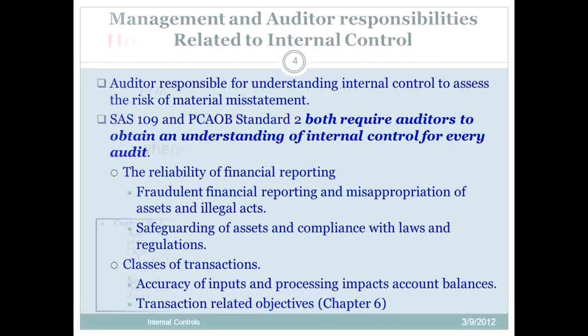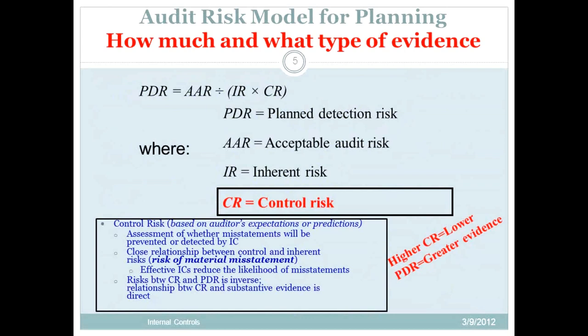Remember the audit risk model: control risk has an inverse relationship to planned detection risk and evidence collection. The higher your control risk, the lower your planned detection risk needs to be, and the more evidence you're going to collect. If you have high control risk, you want to keep your planned detection risk low, so you'll have to gather greater evidence. Control risk is just one component of the risk of material misstatement.